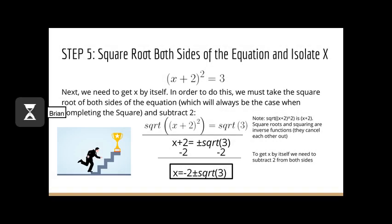The final step to completing the square is to square root both sides of the equation and isolate x. Taking the square root of both sides leaves us with x plus 2 equals plus or minus the square root of 3. Don't forget to add plus or minus in front of the square root answer. Then we subtract 2 from both sides, giving us the final answer: x equals negative 2 plus or minus the square root of 3. This concludes our class. I hope you guys have a great day, and thank you for listening.